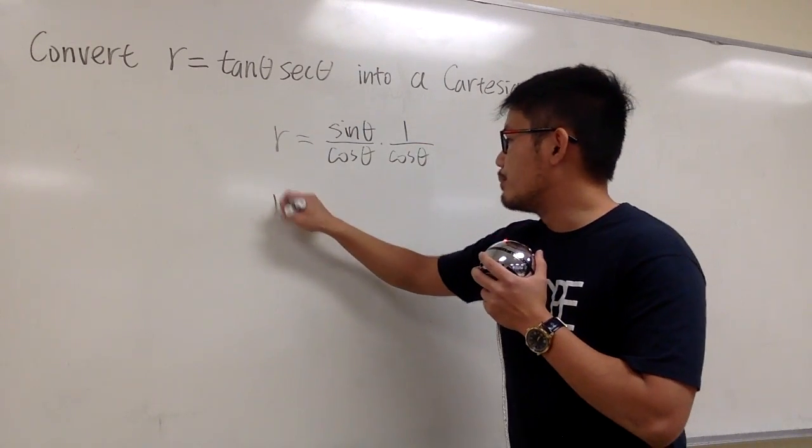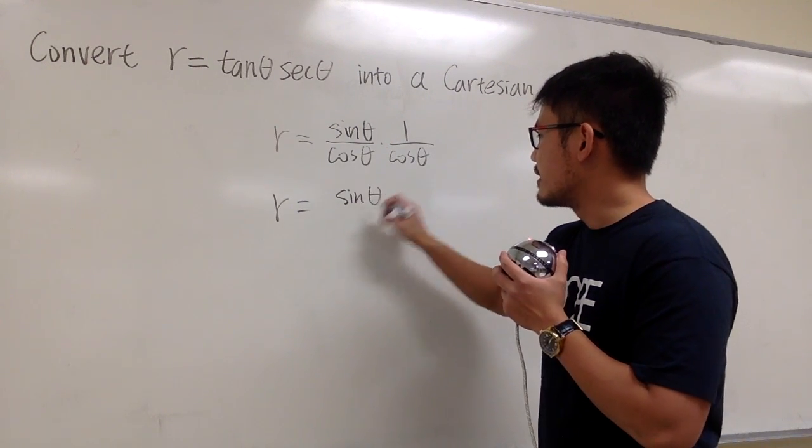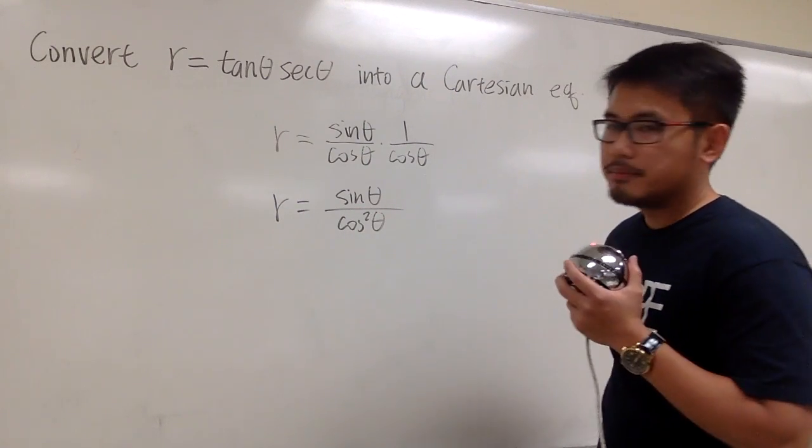And then, of course, we can put these things together. All together, we have sine theta on the top over cosine squared theta on the bottom. And now what?